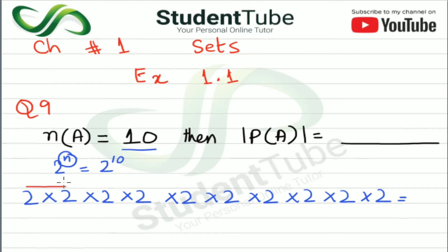So here, 2 times 2 is 4, 4 times 2 is 8, 8 times 2 is 16, 16 times 2 is 32, 32 times 2 is 64, 64 times 2 is 128, 128 times 2 is 256, 256 times 2 is 512, and 512 times 2 is 1024.